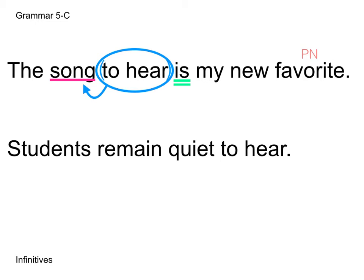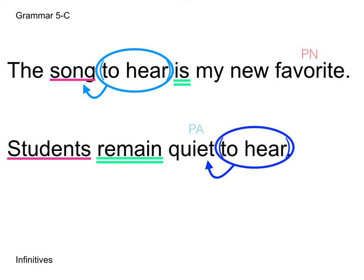Next sentence: 'Students remain quiet to hear.' Students is our subject, remain is our verb, and quiet is our predicate adjective modifying students. 'To hear' is our infinitive — I'll put parentheses around it. It's telling us why the students are quiet, so it's modifying the PA. It's acting like an adverb modifying an adjective. If we got rid of that PA and said 'students remain to hear,' it doesn't make the same sense. It's giving us more information about why they are quiet.